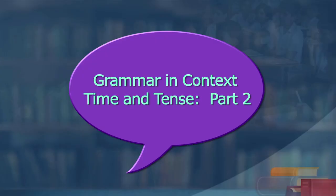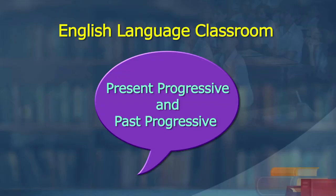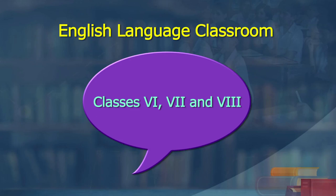Hello learners, welcome to the wonderful world of English language classroom. We are learning some grammar today. This is the second part of time and tense. Today we learn how to understand and use present progressive and past progressive, present continuous and past continuous. This is meant for classes 6, 7, and 8 because we have time and tense in all three classes.